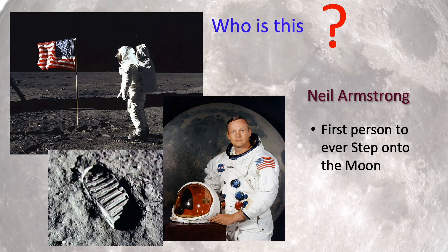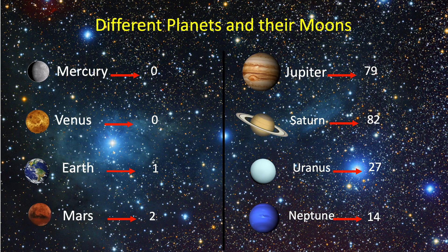Neil Armstrong was the first person to ever step on the moon. Like earth, other planets also have their own satellites. Mars has 2, Jupiter has 79, Saturn has 82, Uranus has 27, and Neptune has 14 moons. Saturn is now the new moon king!